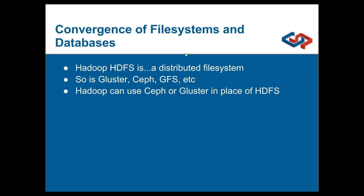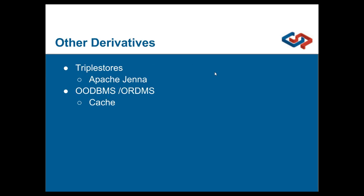Meanwhile, we have a convergence of file systems and databases. Hadoop HDFS is basically a distributed file system, as are Gluster, GFS, and others — essentially Linux cluster file systems. Hadoop can actually use GFS or Gluster in place of HDFS. We're starting to see that for different types of data, the distributed file system is the underlying technology, and above it we have query languages and other things built. There's a convergence starting to happen here.